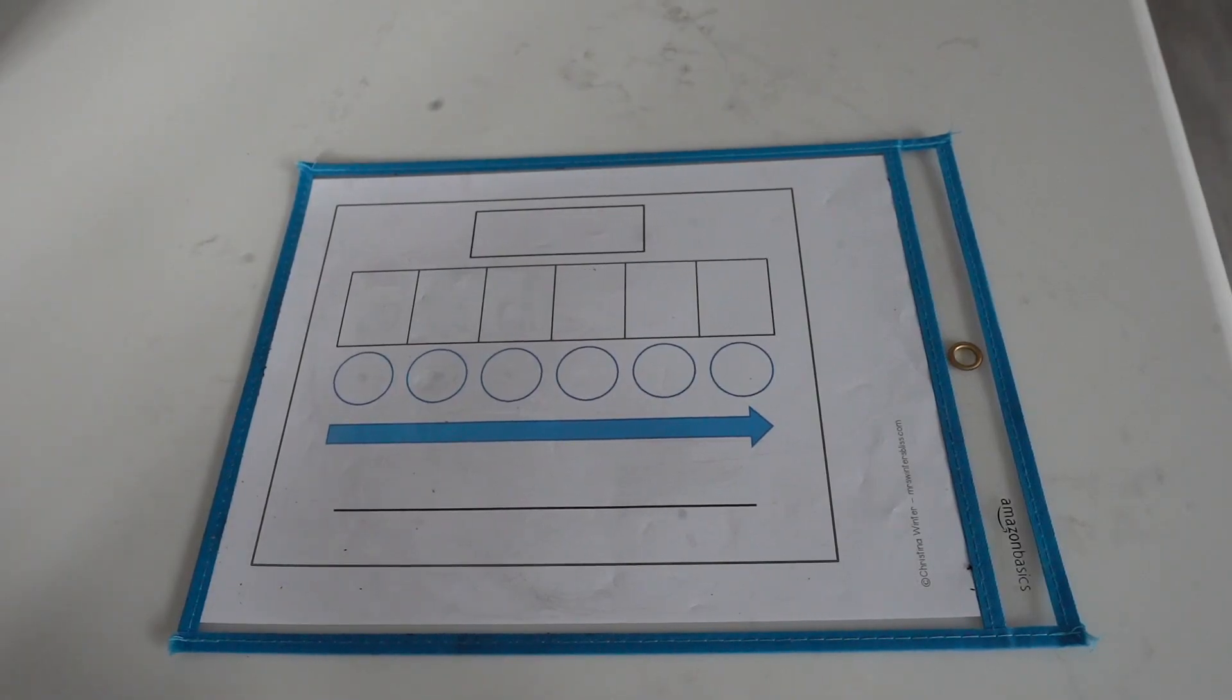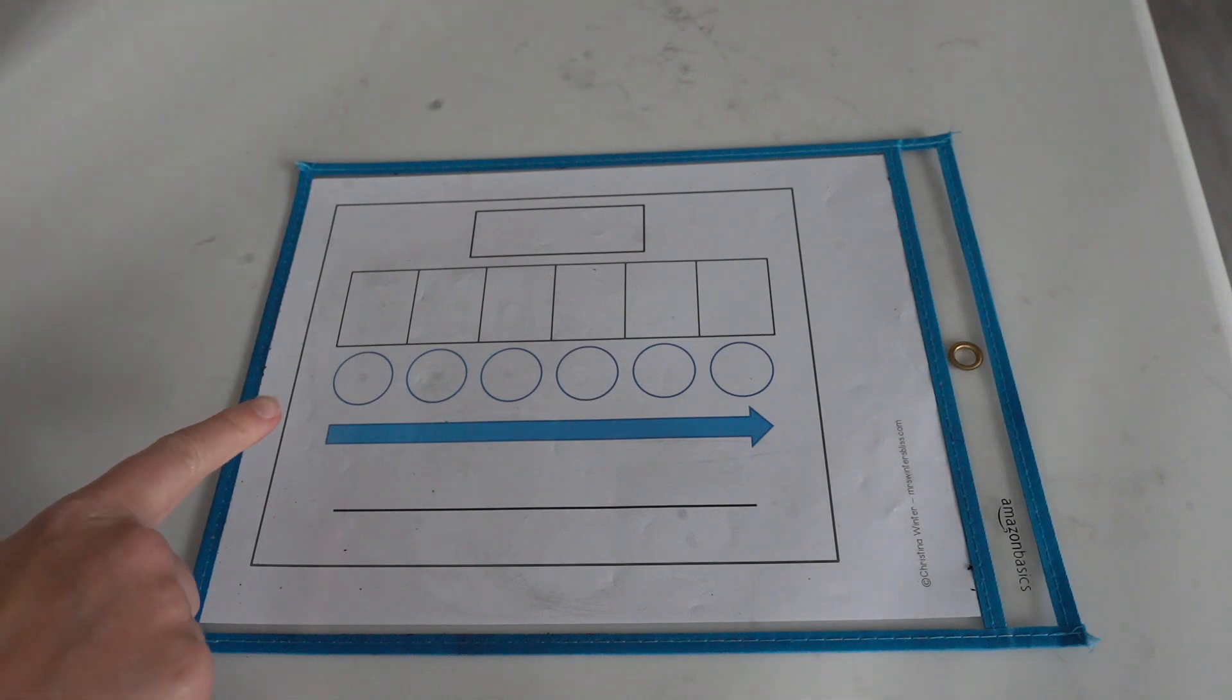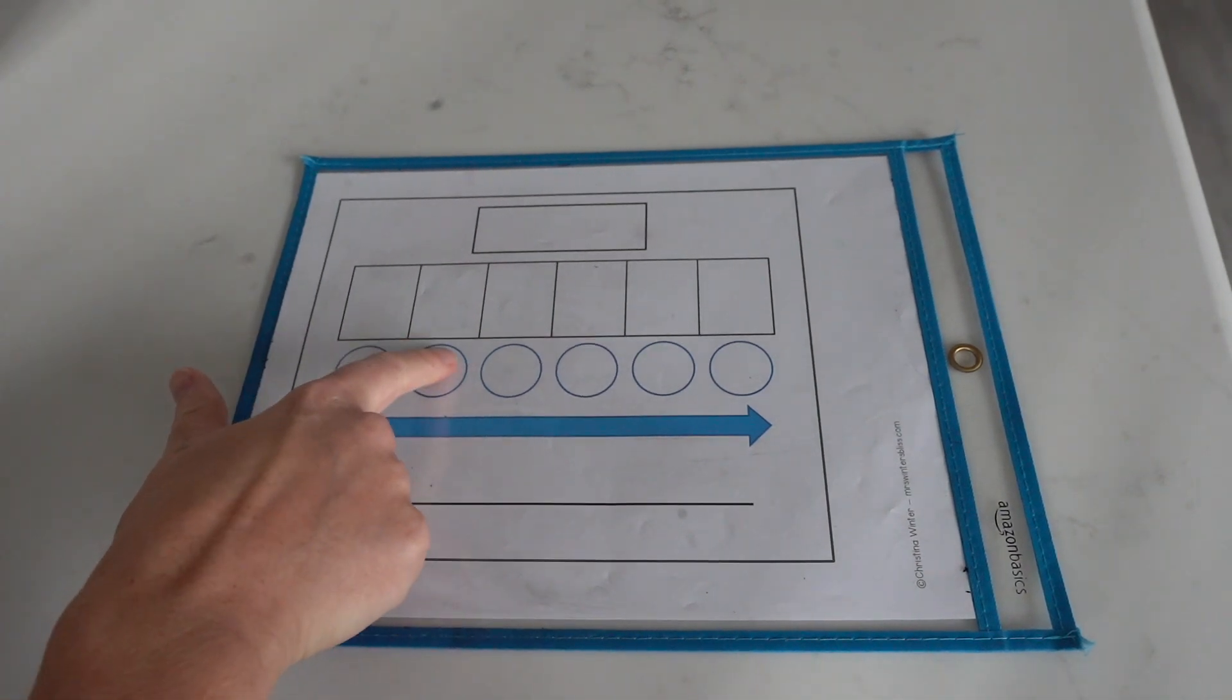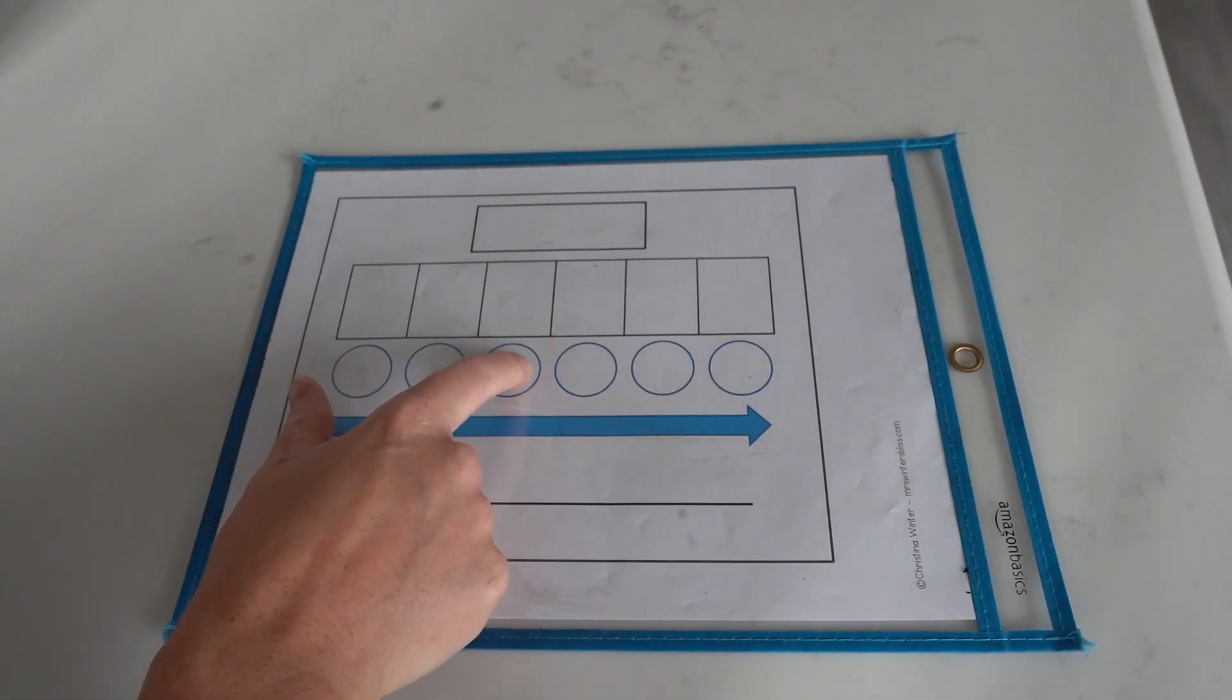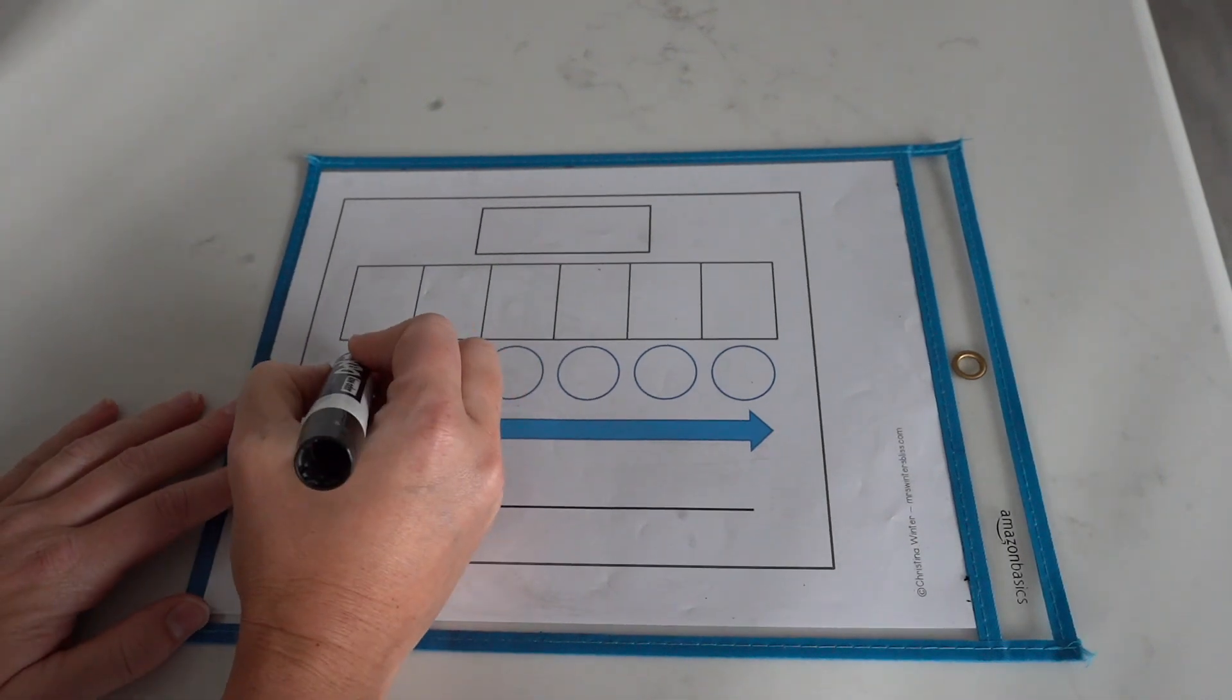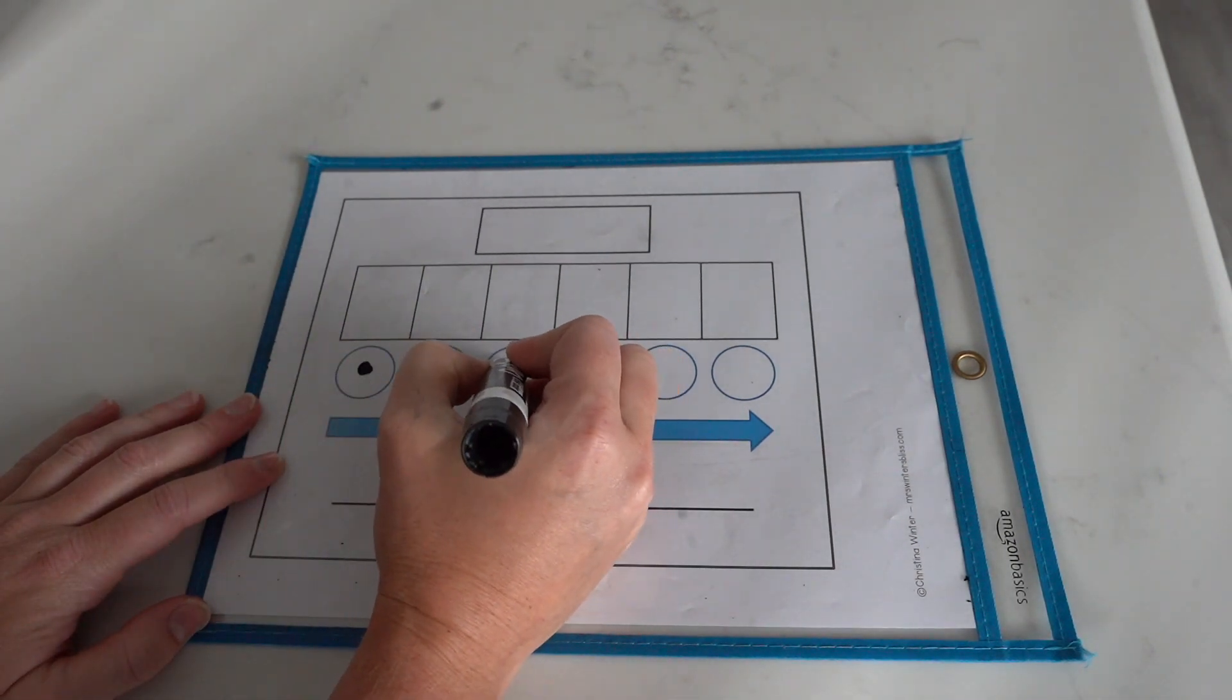Our next word is the word 'said'. Said. Let's tap the sounds we hear. S, e, d. There are three phonemes. S, e, d.